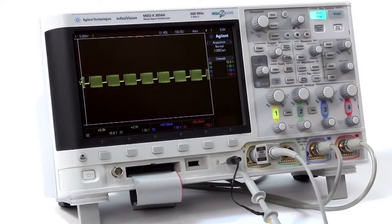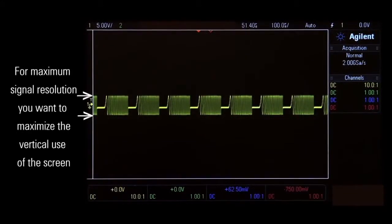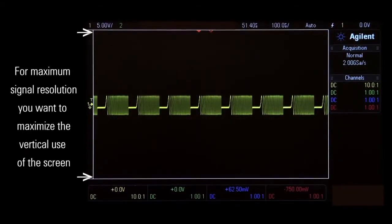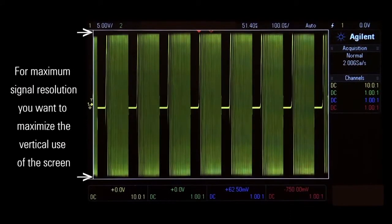Let's look at the Agilent 3000X Series. First, let's maximize the use of the scope's 8-bit digitizer. 8 bits translates to 256 discrete voltage levels on screen, so for the highest signal resolution, you want to use all of them.